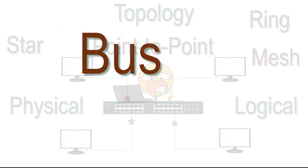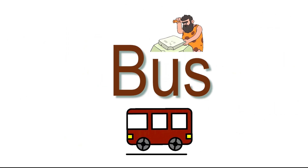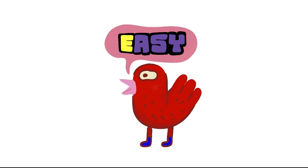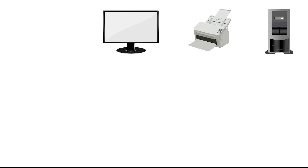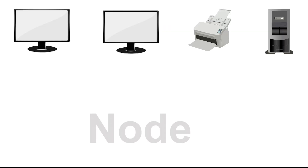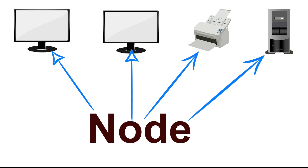Let us start with the bus topology. A bus topology is the earliest implementation of computer networks. By far, it is the most simple and oldest topology. It arranges all nodes in a line. A node is a network device. Computers, printers, and servers are examples of nodes.